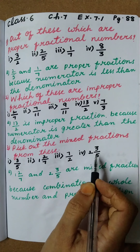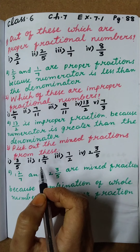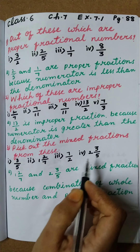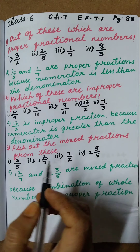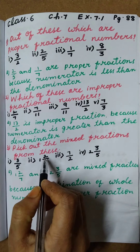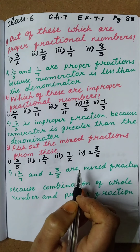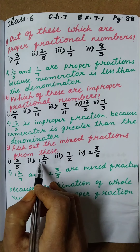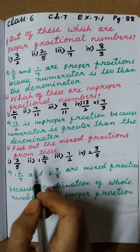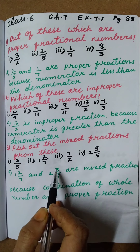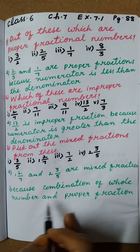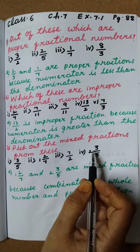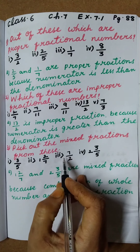These two are the mixed fractions. How to identify the mixed fraction? A mixed fraction is a combination of a whole number and also a proper fraction — that is called a mixed fraction, right? Here 1 and 2 by 7, and here 2 and 3 by 5. The second one and fourth one are the mixed fractions because they are a combination of whole number and proper fraction. In 1 and 2 by 7, 1 is the whole number and 2 by 7 is the proper fraction. Here also, this is the whole number and this is the proper fraction. So these two are the mixed fractions, right children?